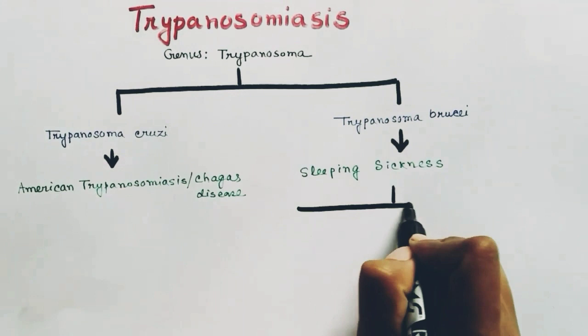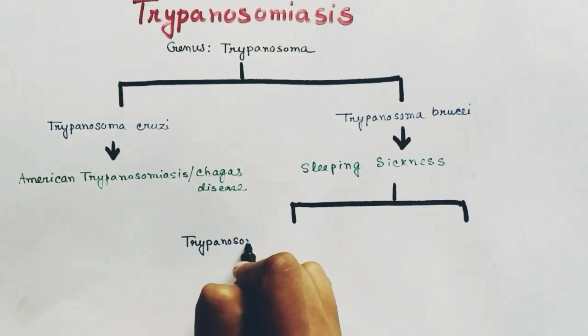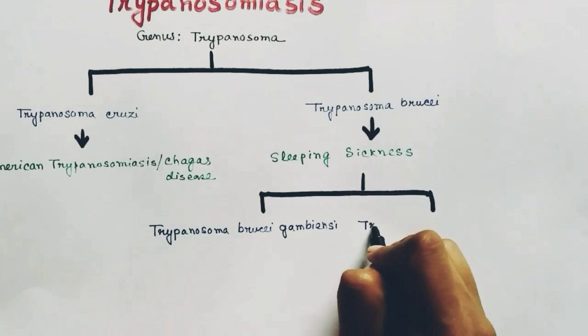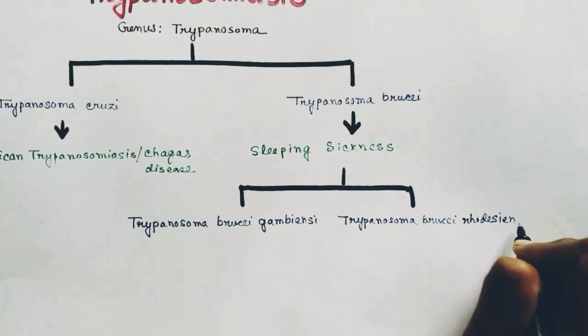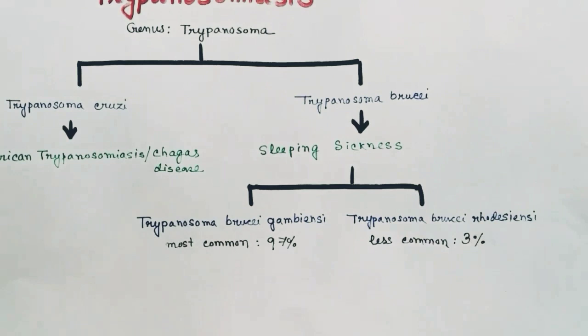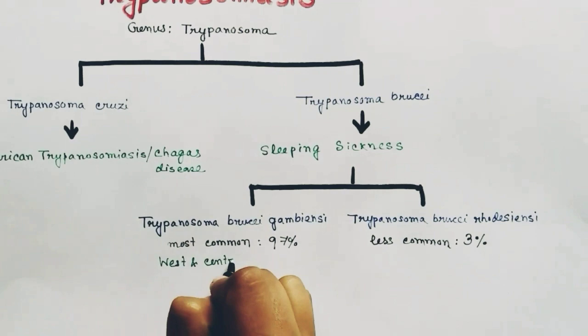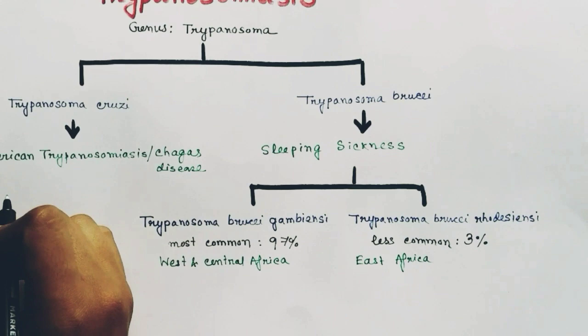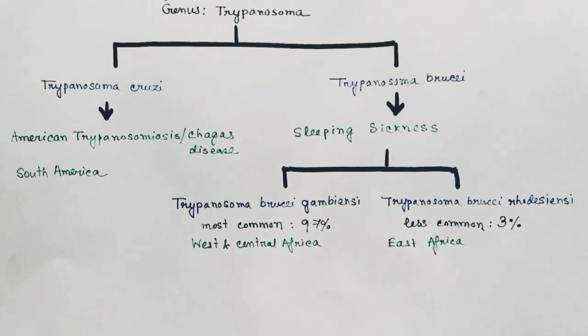There are two subspecies of Trypanosoma brucei: Trypanosoma brucei gambiense and Trypanosoma brucei rhodesiense. Both cause sleeping sickness, but 97% of cases are caused by gambiense and only 3% by rhodesiense. Gambiense is found in West and Central Africa, rhodesiense in East Africa, and Trypanosoma cruzi is found in South America.